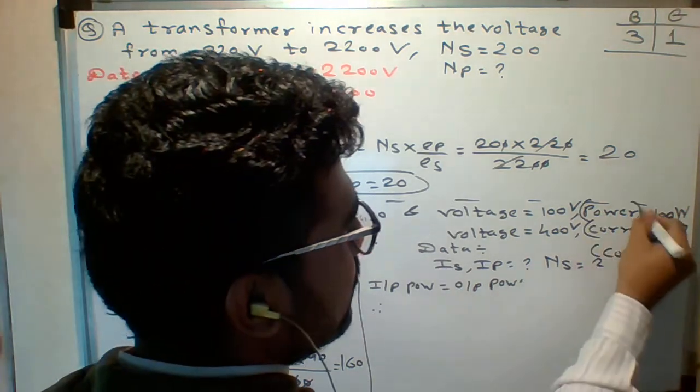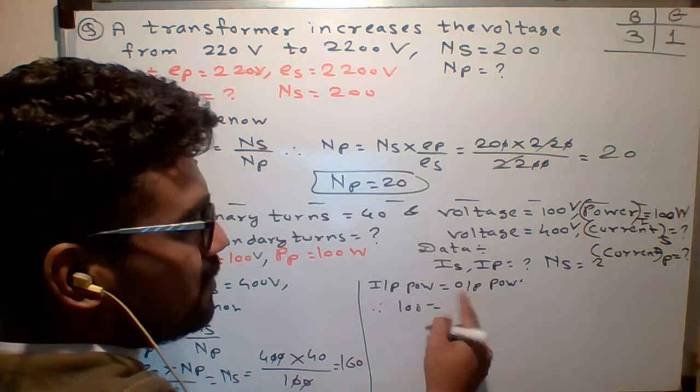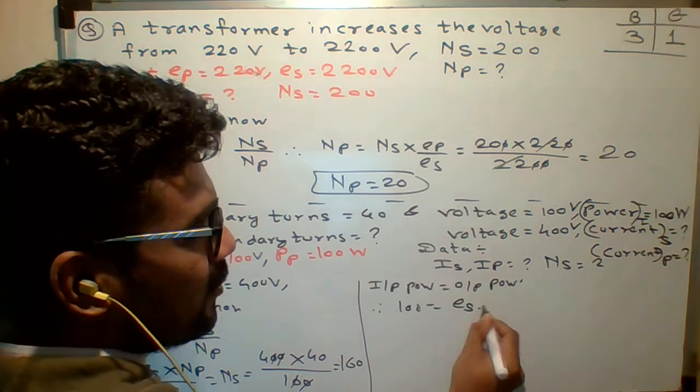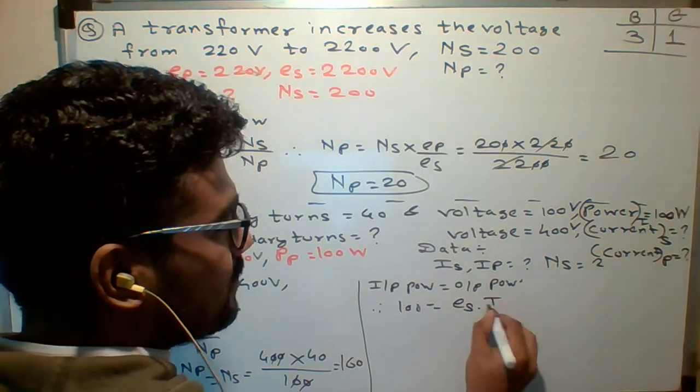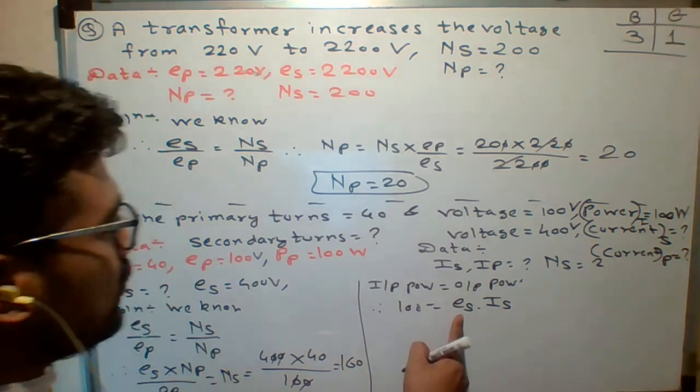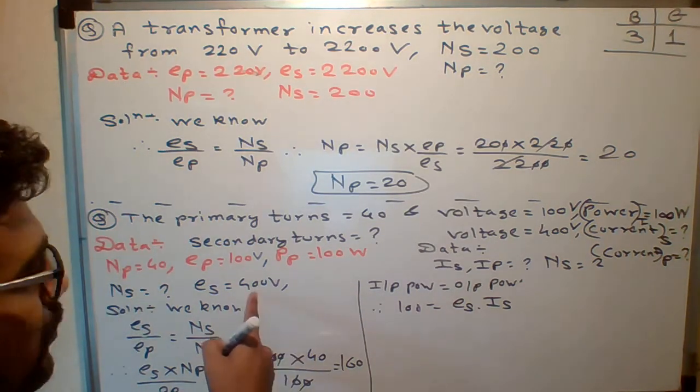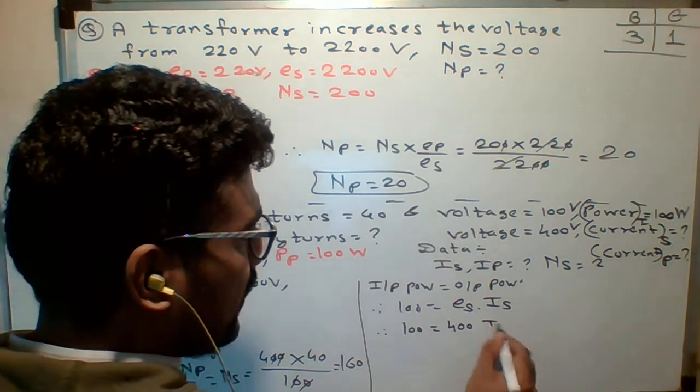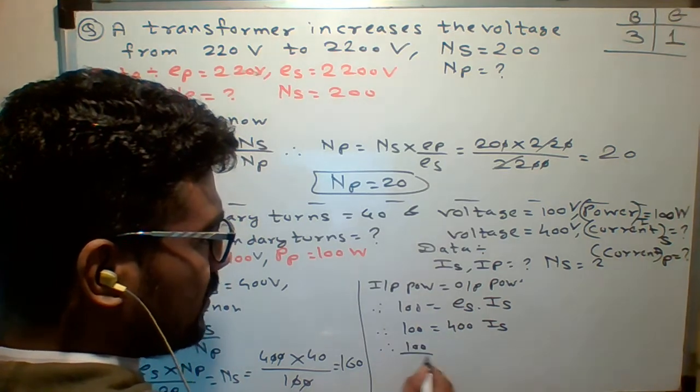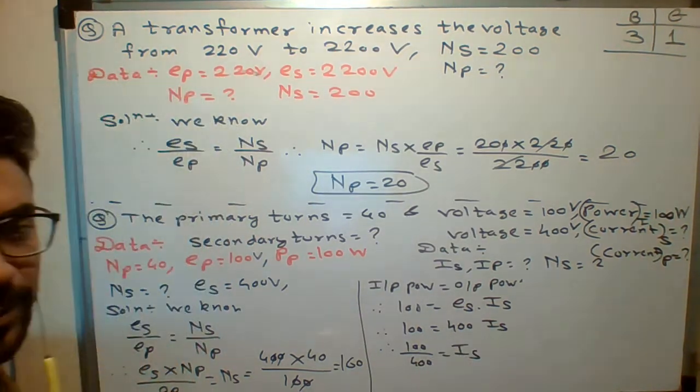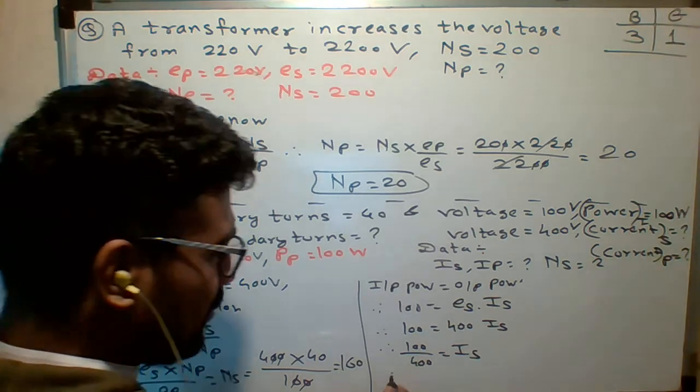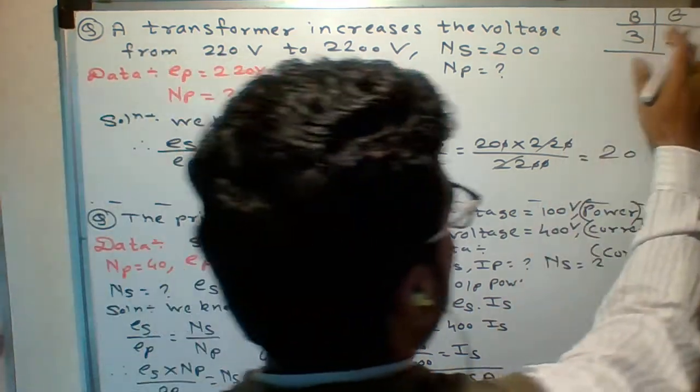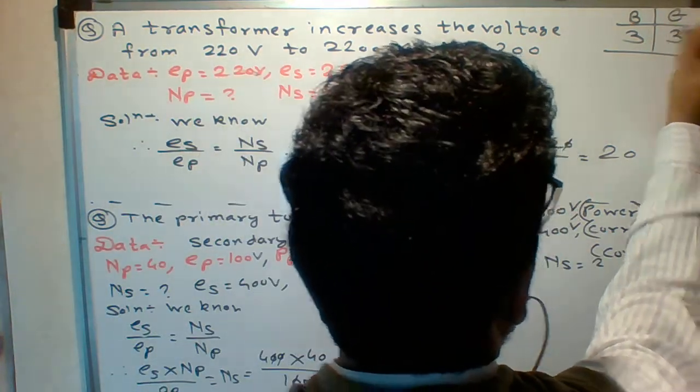And what is output power. Who will tell me the formula for output power. Output power at the secondary side. ES multiplied by what. IS. And what is output power. ES multiple of IS. Okay. So students. ES we know. How much ES. ES. ES the value we know. 400. Yes. So 100 equals to 400 multiple of IS. So who will tell me the value of IS. 100 upon 400. 100 upon 400 is what. Asmita says 0.25. Very good. 0.25 ampere. Along with the unit. He says. Plus 2. Matlab 3 points. Girls. Okay.